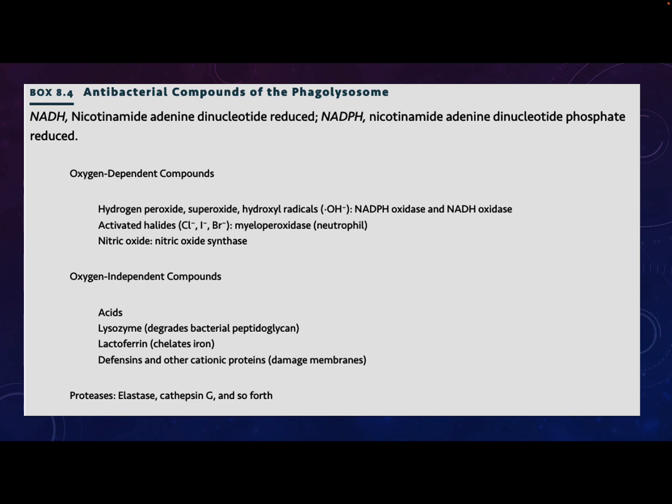Do you remember how microbes can deal with hydrogen peroxide? Catalase. Many, many microbes produce an enzyme called catalase that turns hydrogen peroxide into oxygen and water — it makes bubbles. That's just one strategy that some microbes have to avoid being destroyed in the phagolysosome. We'll pick up on Monday with more of the immune system, and then we'll start getting into gram-positive coccus-shaped bacteria — things like staph and strep. Have a great weekend.